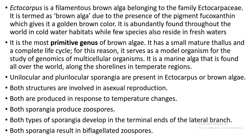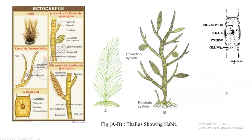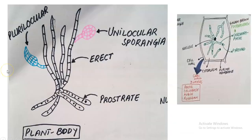Coming to the reproductive structures, there are two kinds of sporangia present on Ectocarpus. The elongated sporangia is known as plurilocular sporangia, and the globular-shaped sporangia are called unilocular sporangia. Both are involved in asexual reproduction, which we will see during the reproductive cycle discussion.